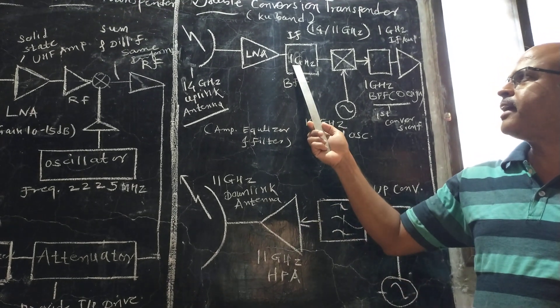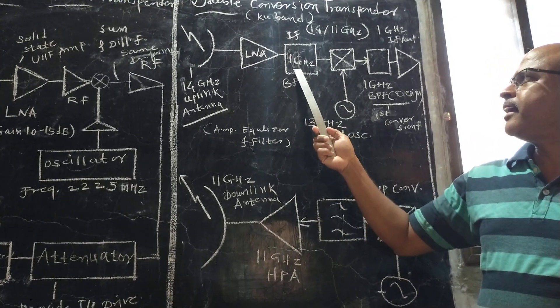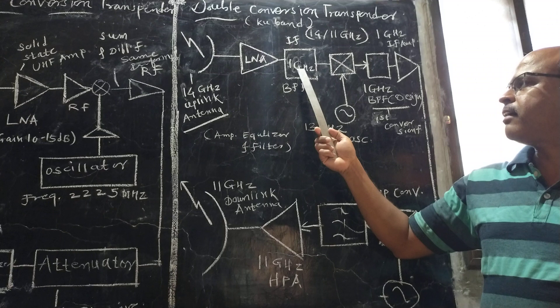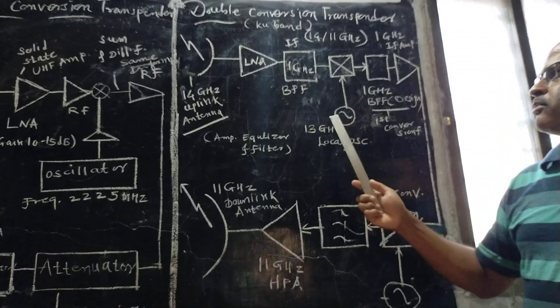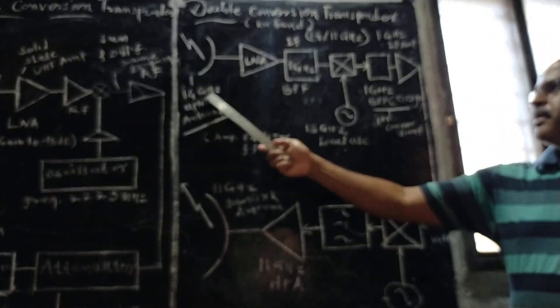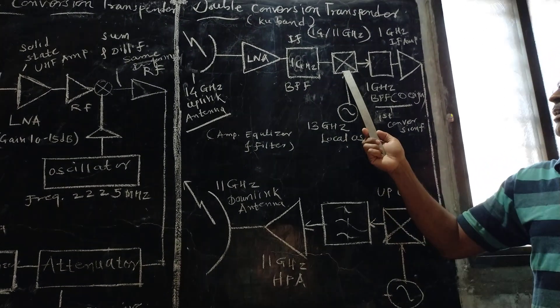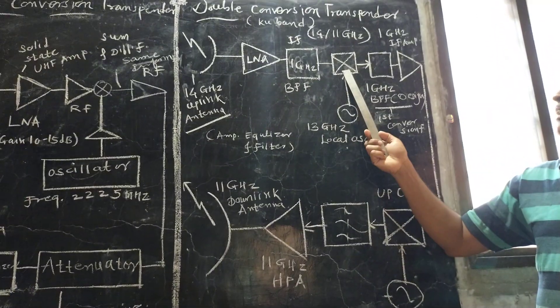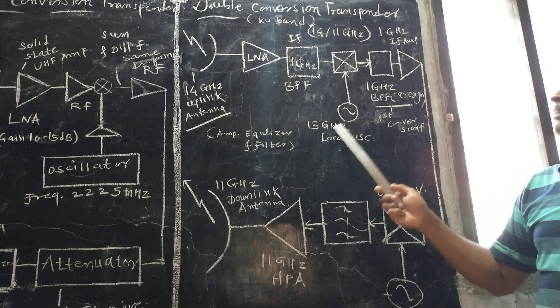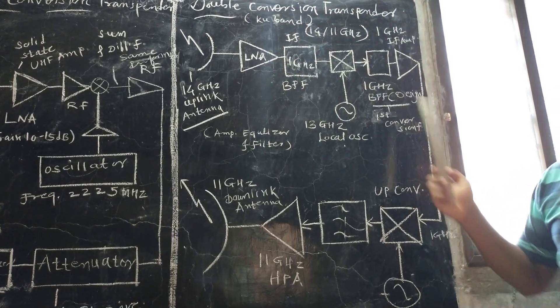An intermediate frequency of 1 GHz is selected. The 14 GHz uplink frequency is mixed with a 30 GHz local oscillator frequency, producing the 1 GHz intermediate frequency.